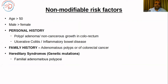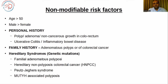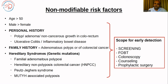For colorectal cancer, there are many hereditary syndromes. The most common ones are familial adenomatous polyposis (FAP), HNPCC, Peutz-Jeghers syndrome, and other polyposis syndromes. In all of these, there is scope for early detection by screening and surveillance. Screening and surveillance can be done with fecal occult blood test and colonoscopy, genetic counseling and genetic testing, and in some cases, prophylactic surgery.